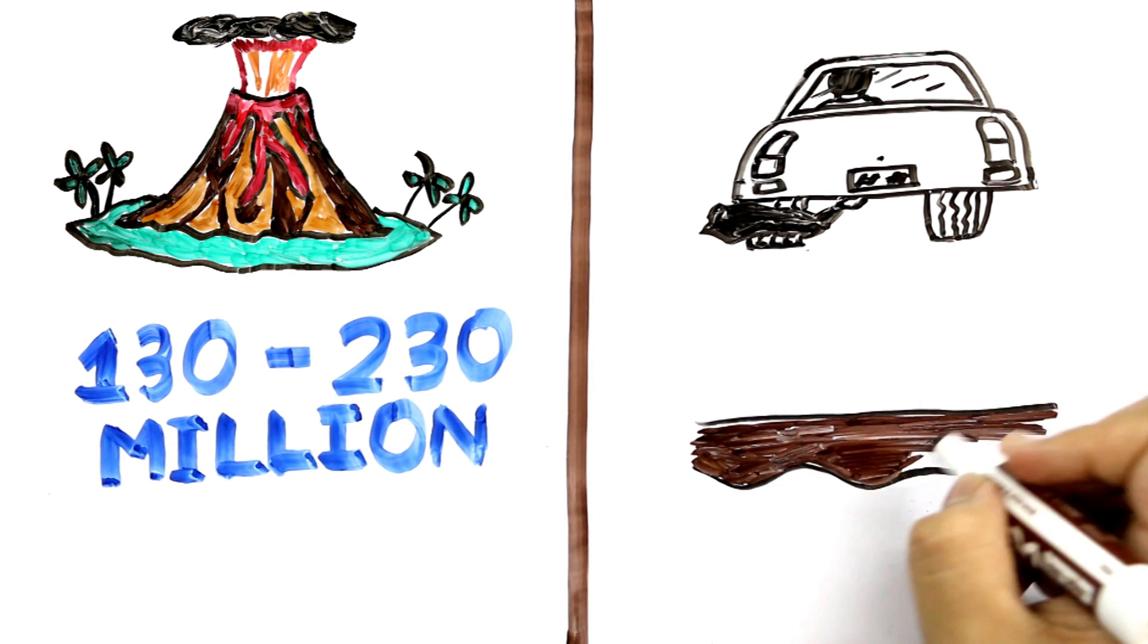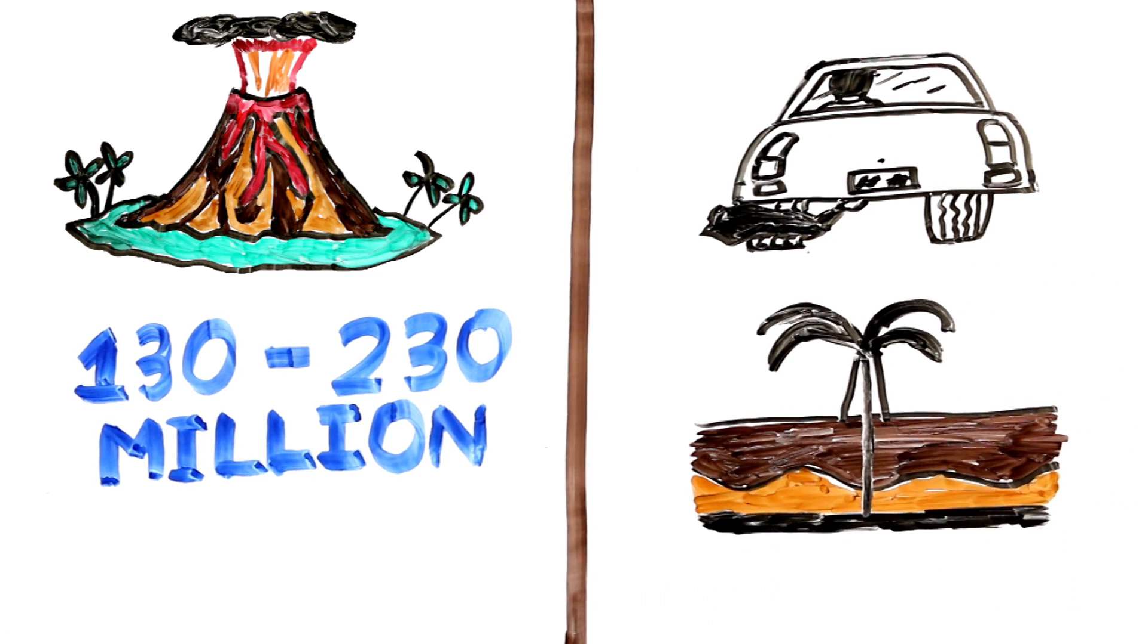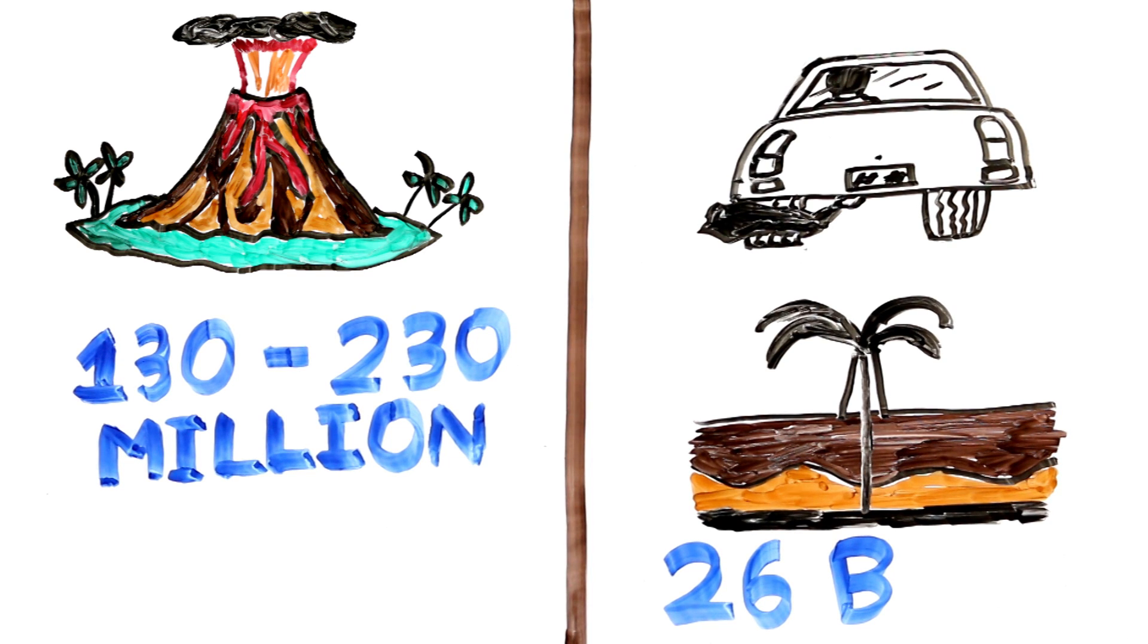By burning fossil fuels, people release in excess of 100 times more, about 26 billion tons of carbon dioxide into the atmosphere every year. As a result, human activity overshadows any contribution volcanoes may have made to recent global warming.